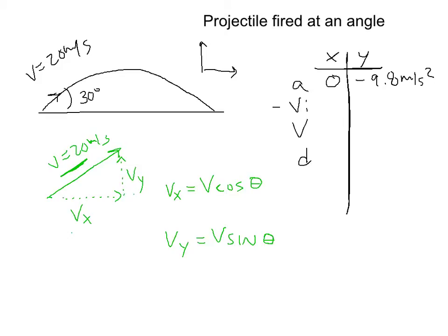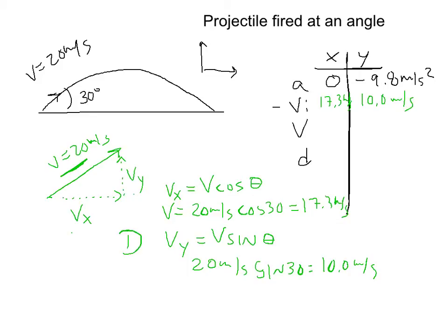The sine is the opposite side. The cosine is the adjacent. So vx is equal to 20 meters per second times the cosine of 30. That's equal to 17.3, or about 17.3 meters per second. And vy, if we do the same thing, 20 meters per second times the sine of 30. And that's equal to about 10 meters per second. So we can fill this in. The vx is 17.3 meters per second. And the vy is 10.0 meters per second. So that's the first step, the first thing that we need to look at.